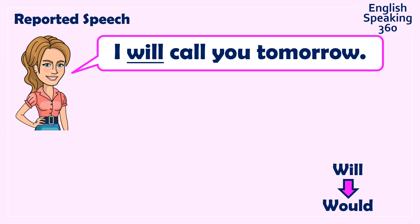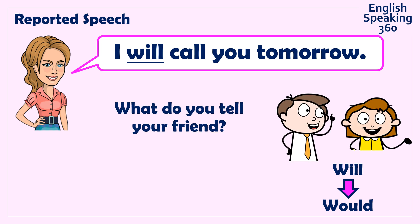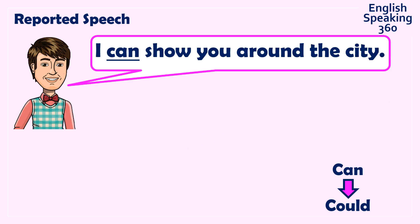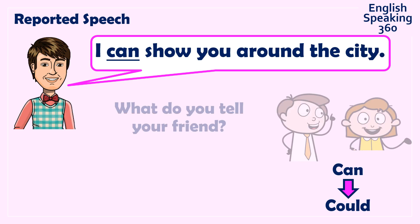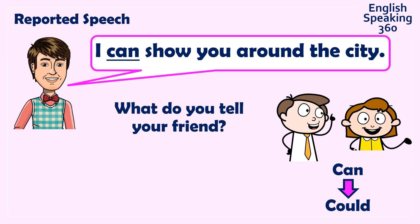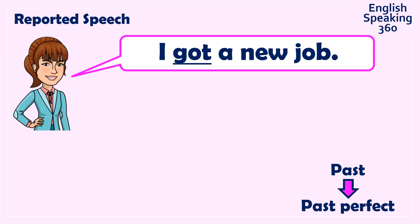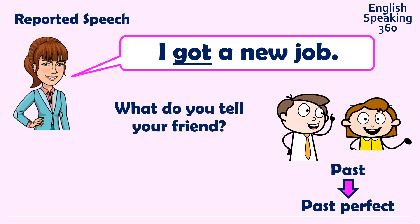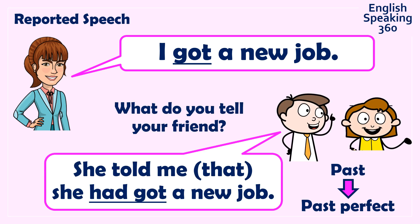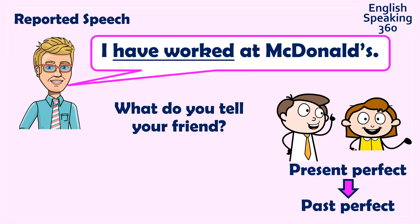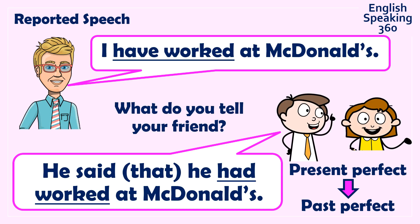Practice: 'I will call you tomorrow.' What do you tell your friend? She told me that she would call me tomorrow. Next: 'I can show you around the city.' He said he could show me around the city. Next: 'I got a new job.' She told me she had got a new job — or 'she told me she had gotten a new job' is also good. And: 'He said he had worked at McDonald's.'